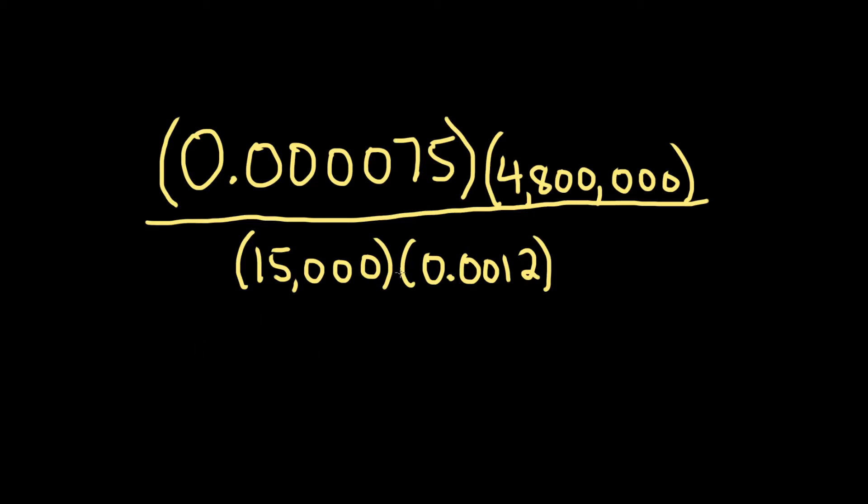Hello, in this problem we're going to simplify this expression by hand, and we're going to do that using scientific notation. So we're going to convert everything into scientific notation. So first let's think about what we want. It would be really nice if this was a 75 and this was a 15. So 75 over 15 is 5, so that would be nice if we had a 75 and a 15.